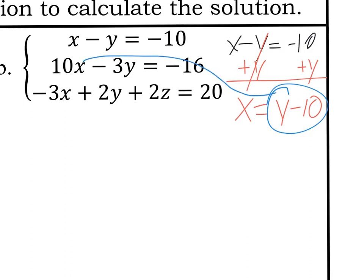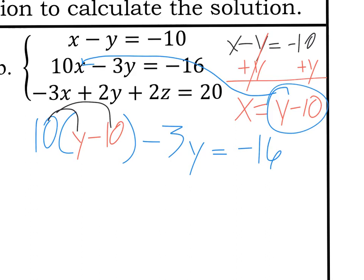So here's my equation for x. I'm going to take that, plug it into the next one, because that one only has two variables again. And so I'll have 10 parentheses, y minus 10, and then minus 3y equals negative 16. I'll distribute the 10 to what's inside the parentheses. And then I guess before I do that, you'll notice I plugged in a y minus 10 in place of x. Now I only have the y variable there. So that's good. I'll be able to solve for the y variable and get an answer for y.